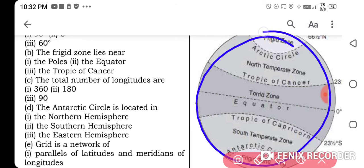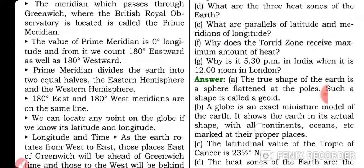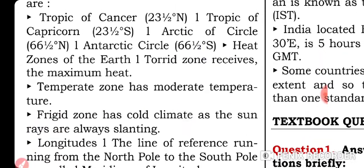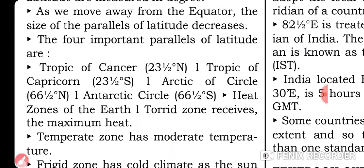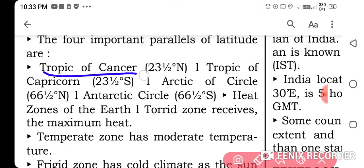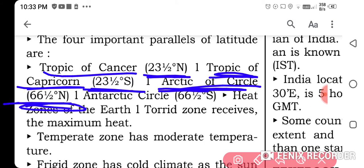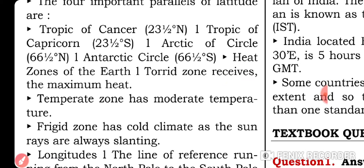I hope you understood the diagram. The four important parallels of latitude are: Tropic of Cancer at 23.5° North, Tropic of Capricorn at 23.5° South, Arctic Circle at 66.5° North, and Antarctic Circle at 66.5° South.